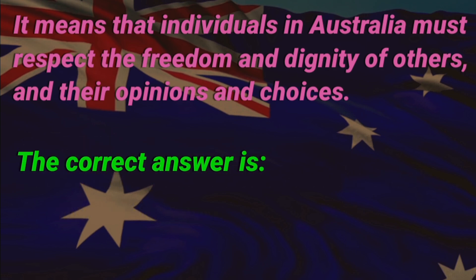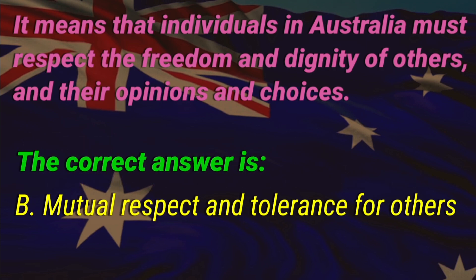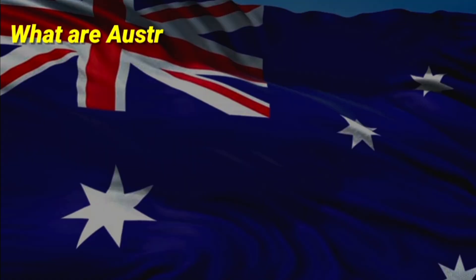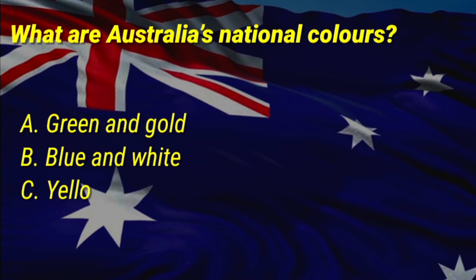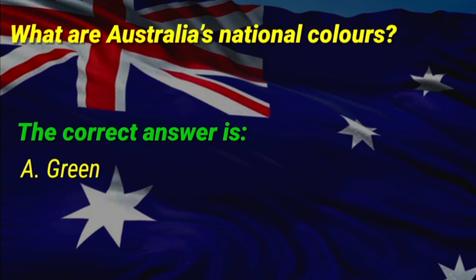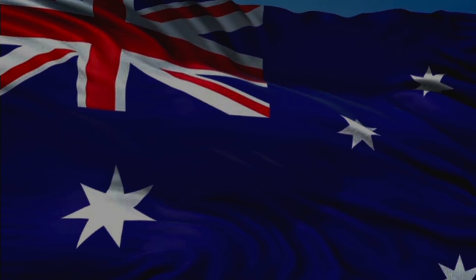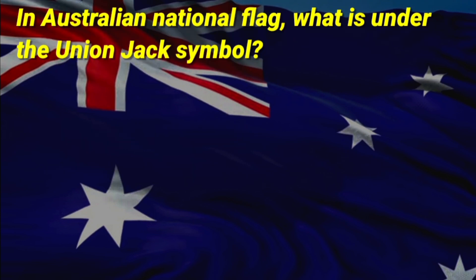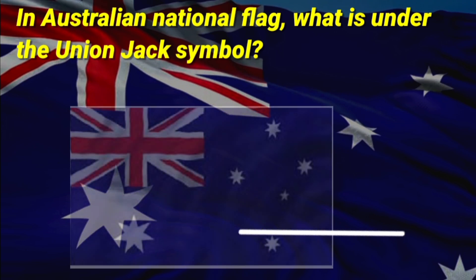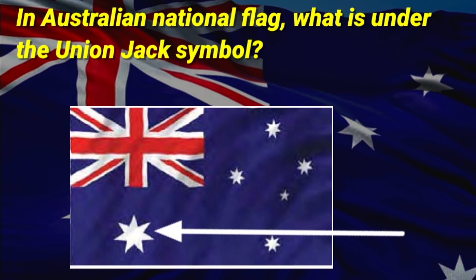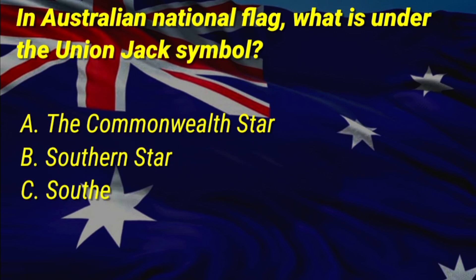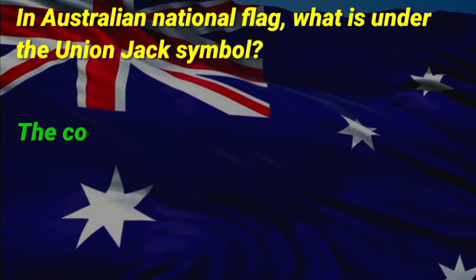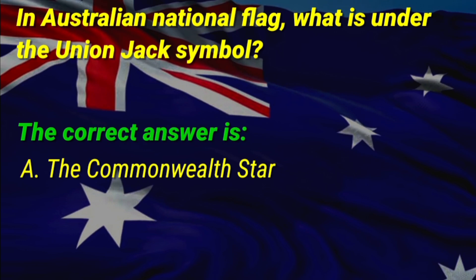A: fair go, B: mutual respect and tolerance for others, C: none of the above. The correct answer is B, mutual respect and tolerance for others. What are Australia's national colors? The correct answer is A, green and gold. In the Australian national flag, what is under the Union Jack symbol? The correct answer is A, the Commonwealth Star.